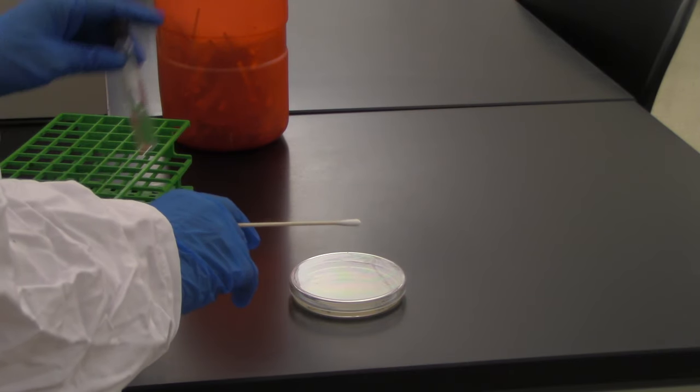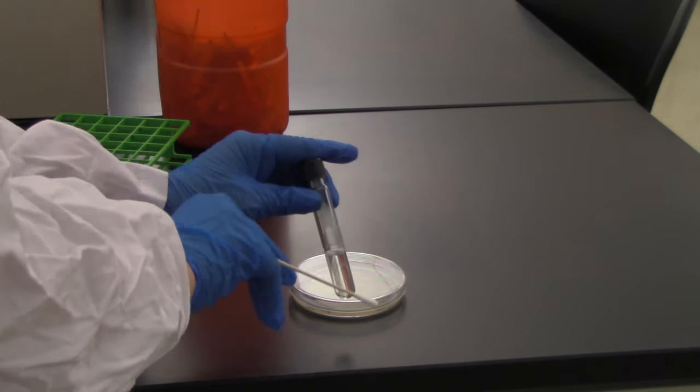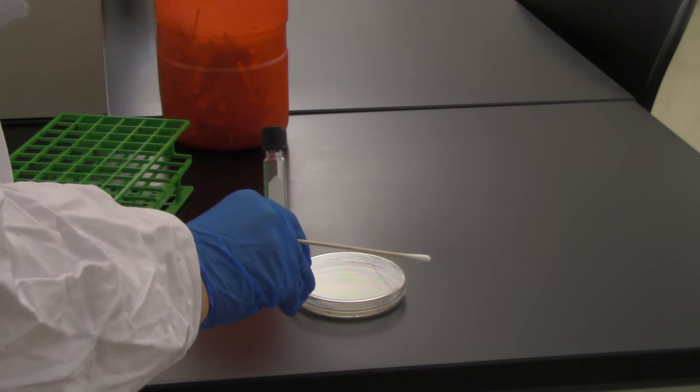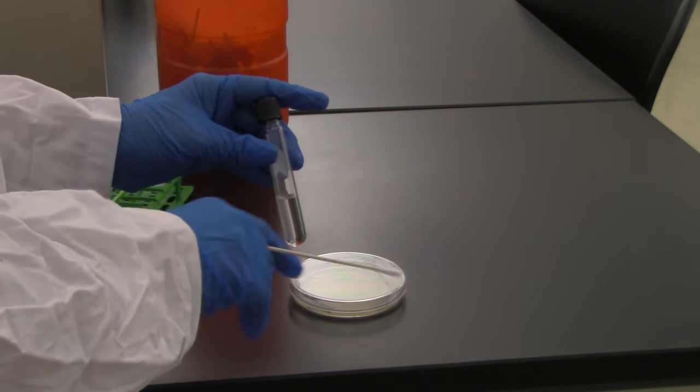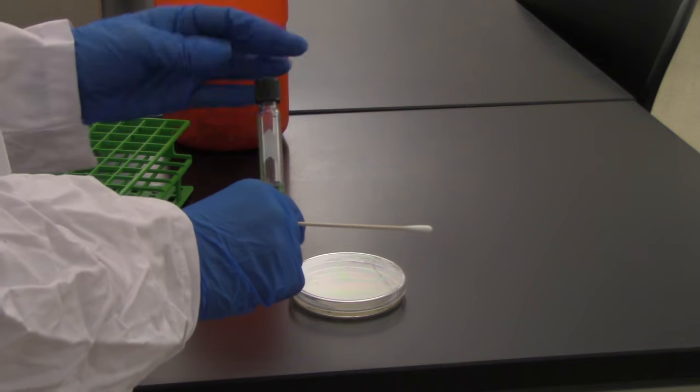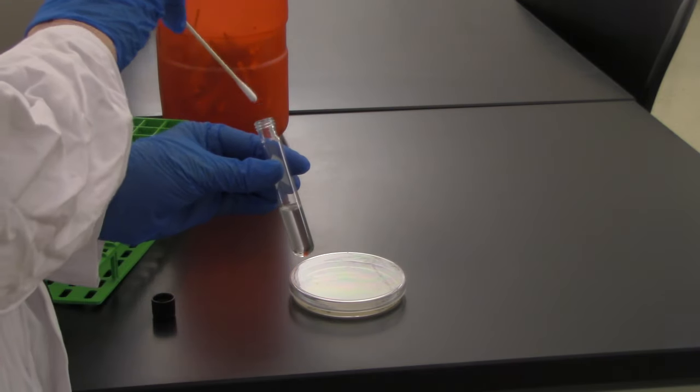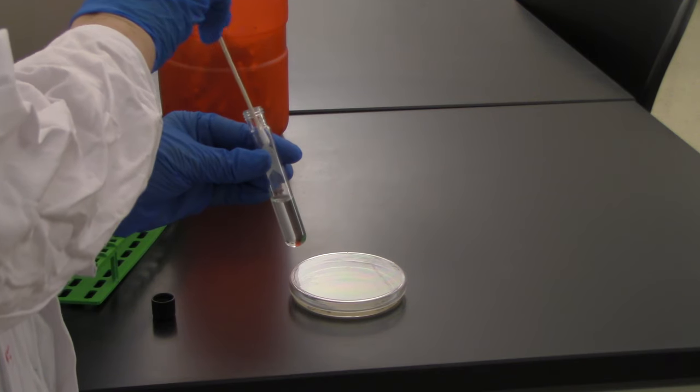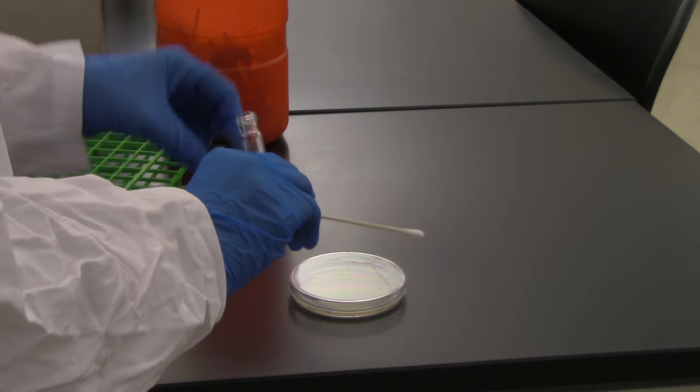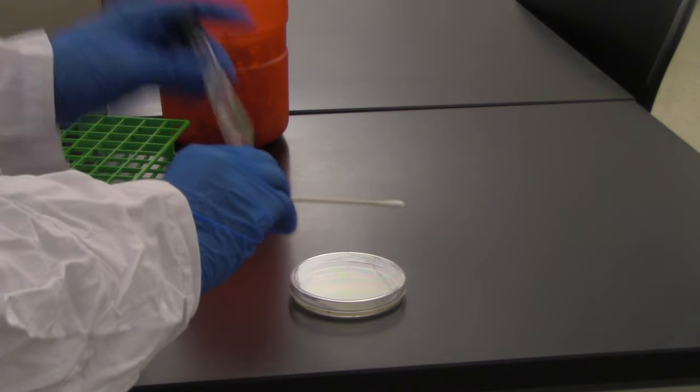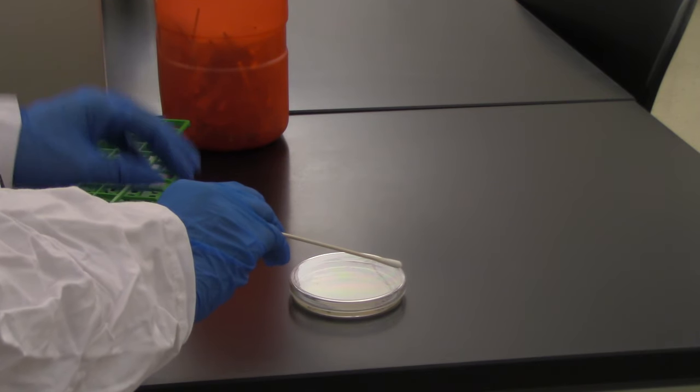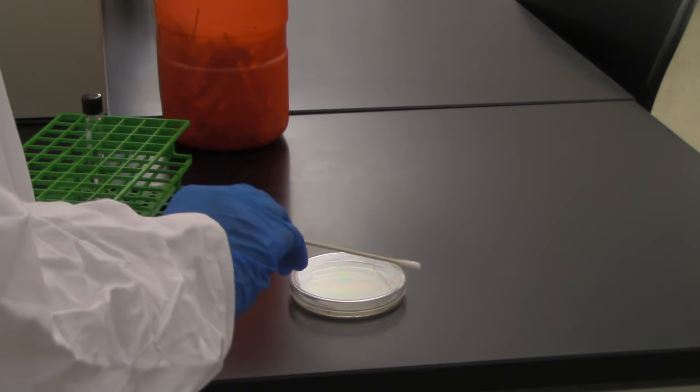I want to dip my swab into this sterile water to get it wet. If I'm going to a dry surface, I can maximize the amount of bacteria I could possibly pick up. I'm going to take the lid off and dip the swab in. Get it nice and wet, soaked there. We're going to discard this when we're done, so don't worry about taking extra measures. Now I'm going to go to my environmental sample.